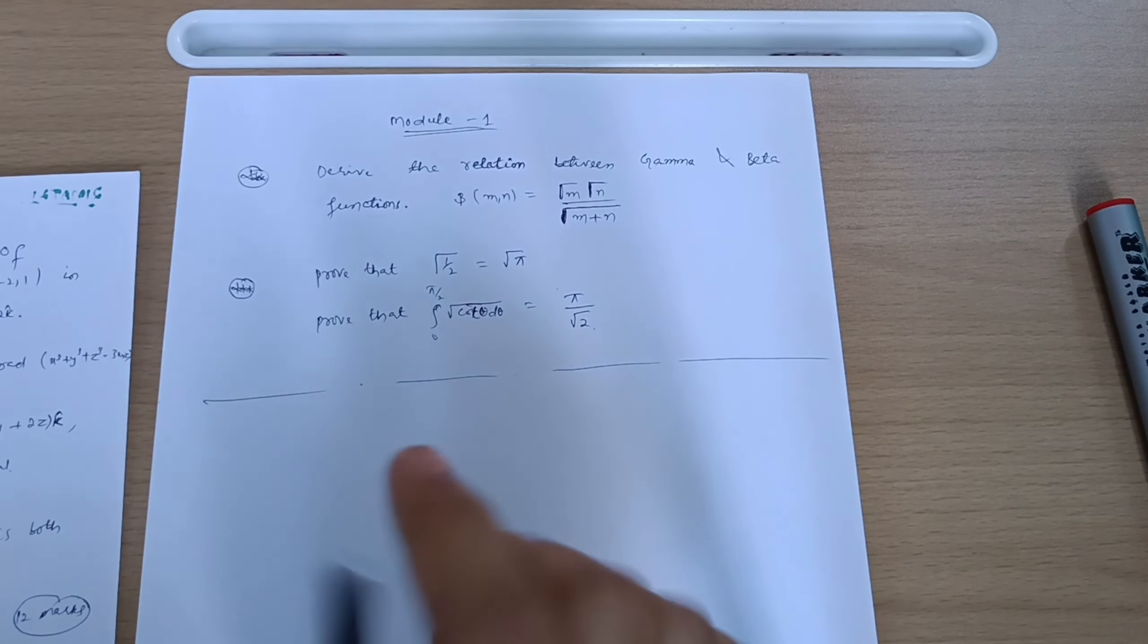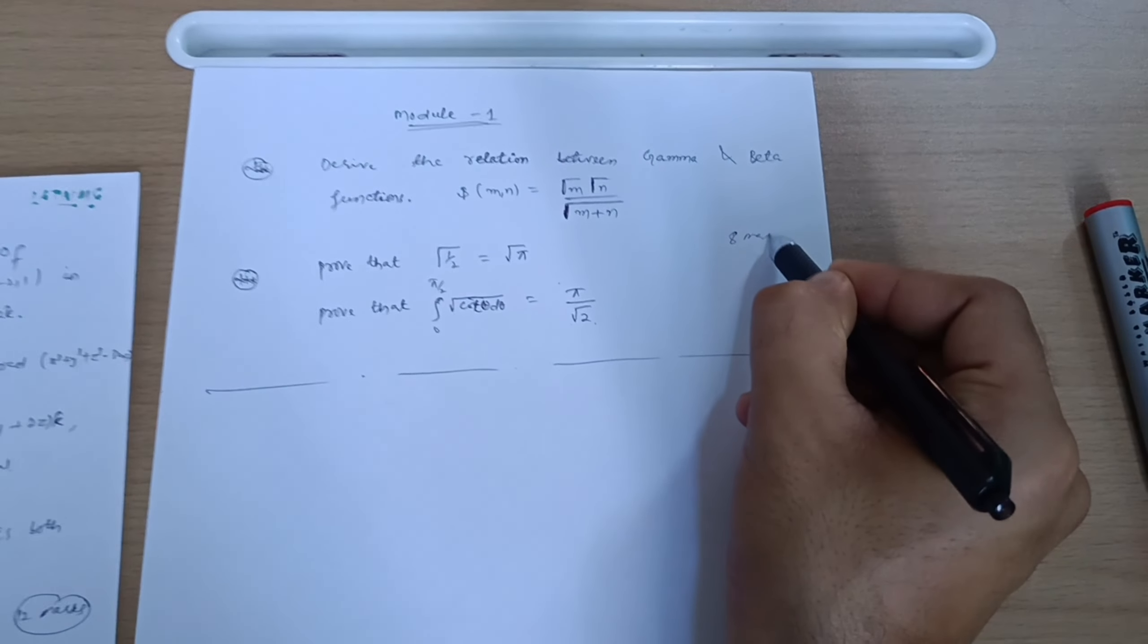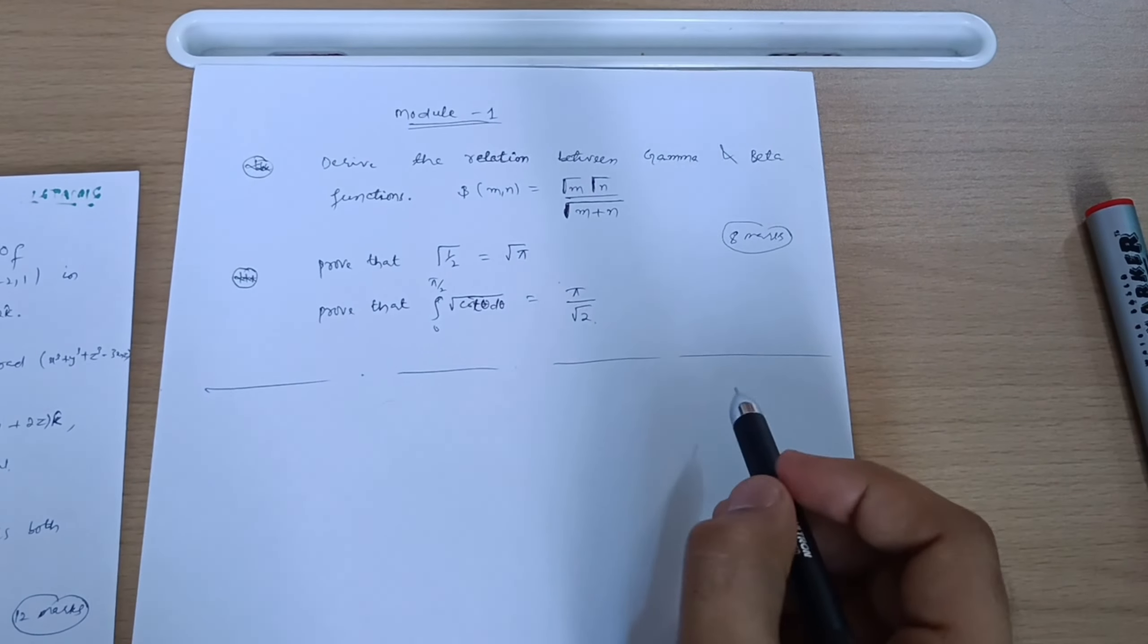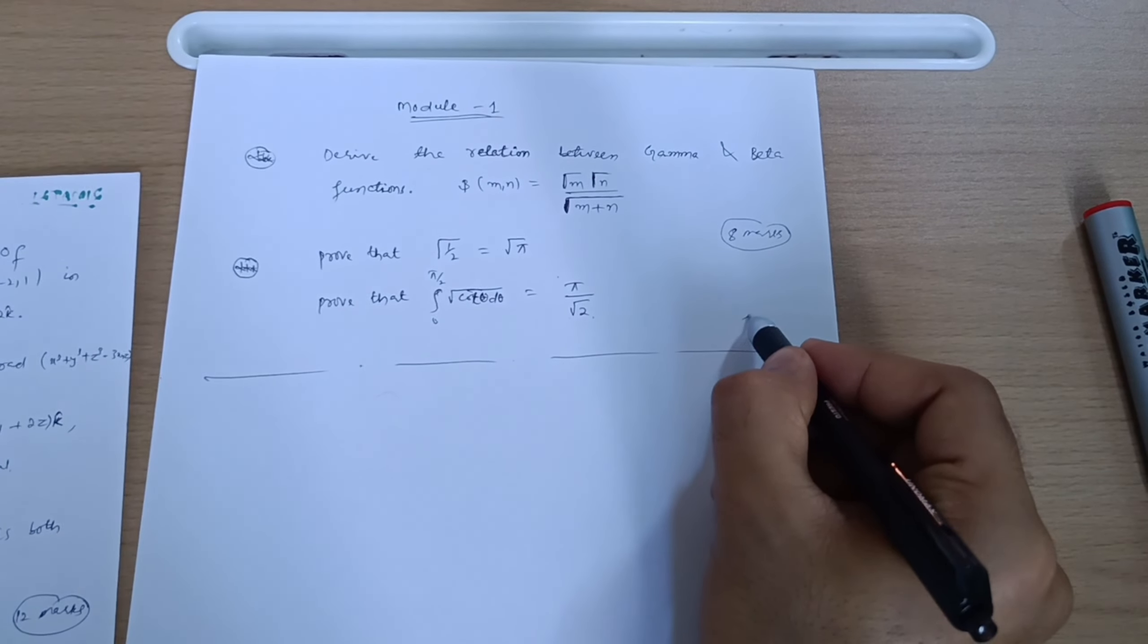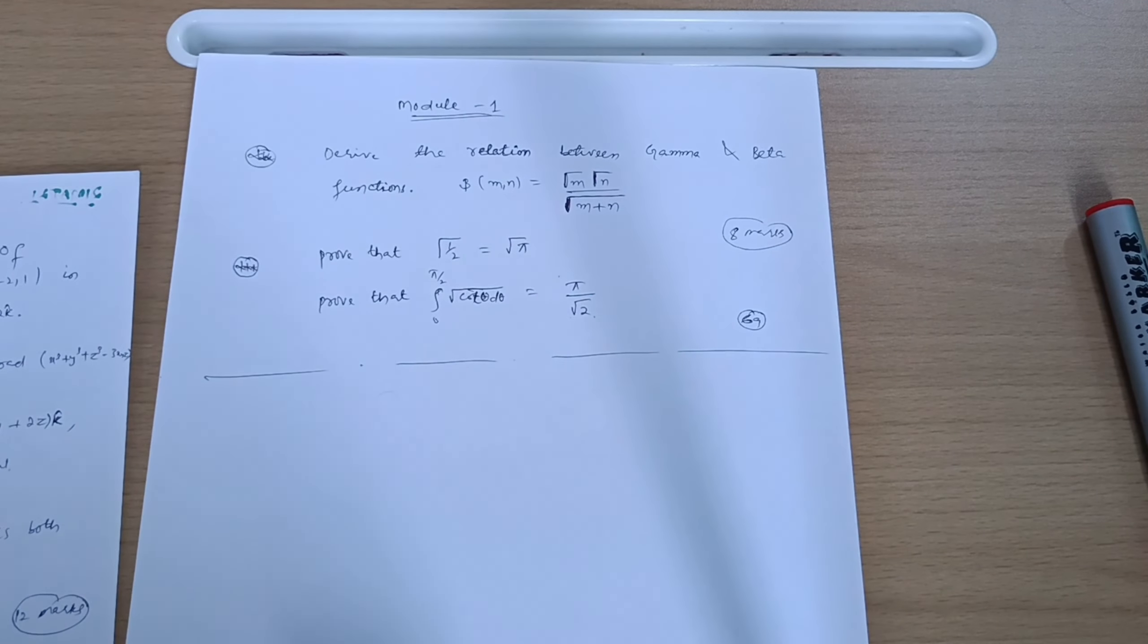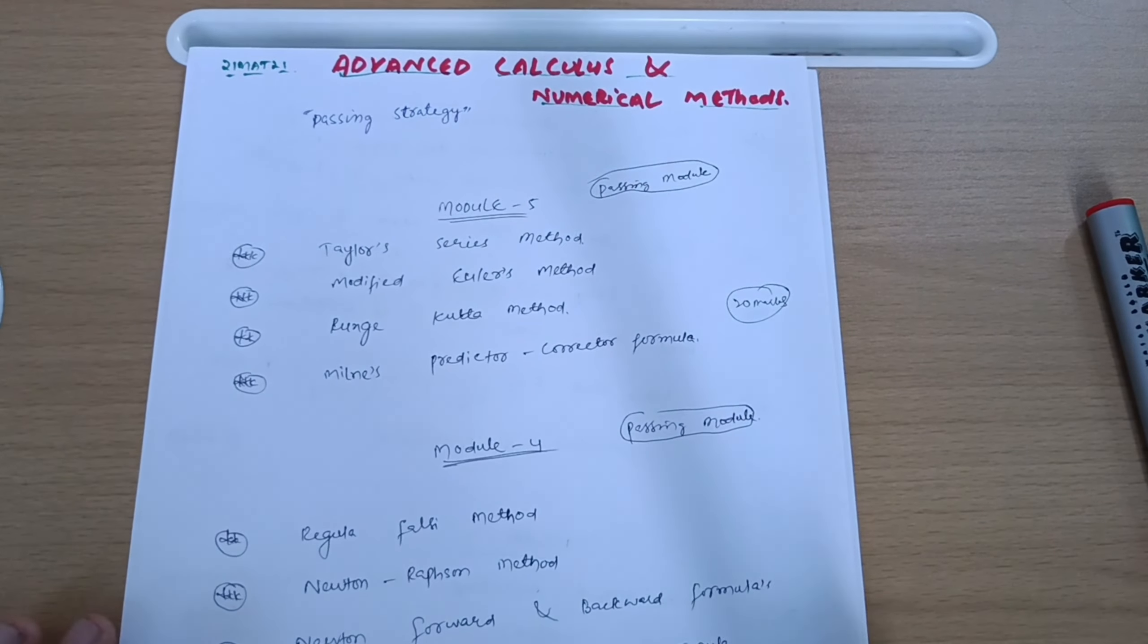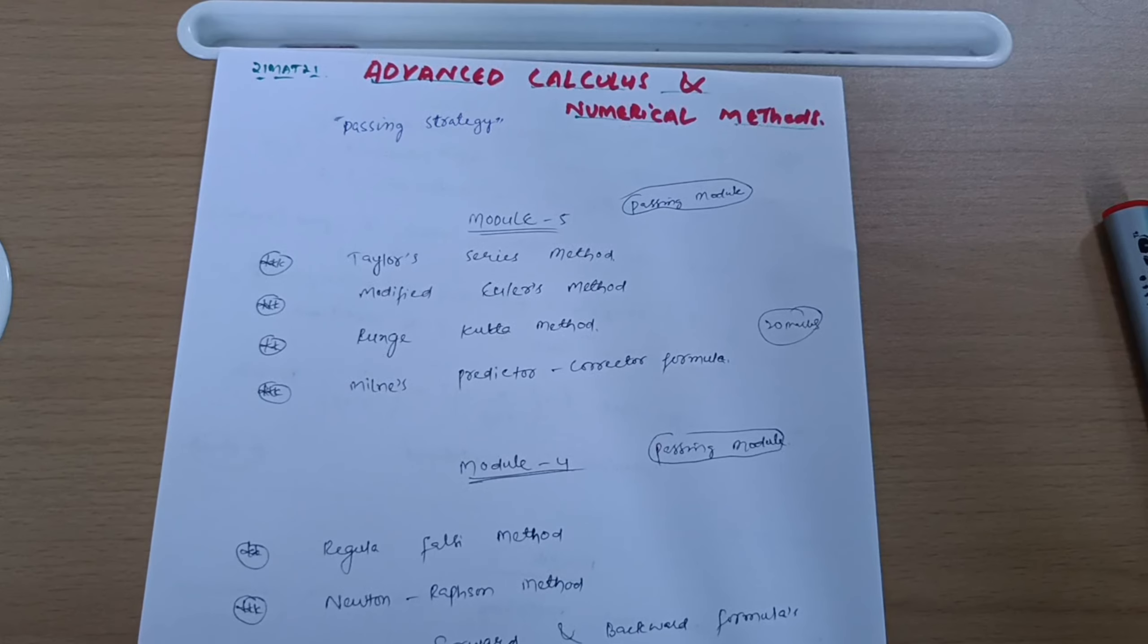Next is find divergence of F and curl of F, where F is equal to grad of x cube plus y cube plus z cube minus 3xyz. So you should go through three to four problems from these two topics, and also irrotational and solenoidal problems, two to three problems from previous year papers.